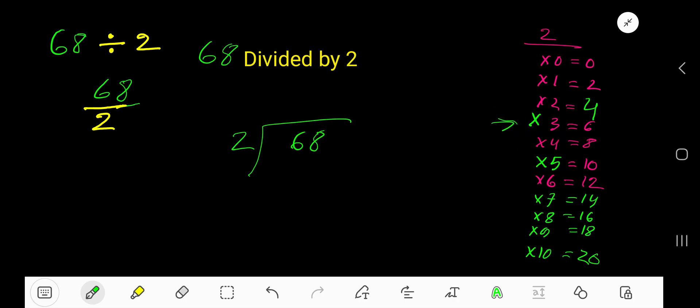Look, 3 times, right? 3. Now multiply 3 times 2 is 6. If you subtract, you are getting 0. Bring down this 8.